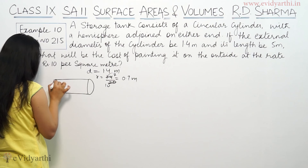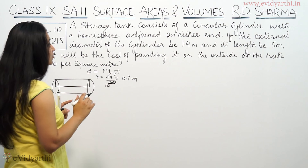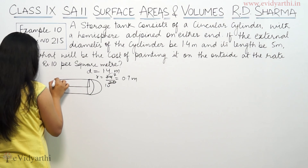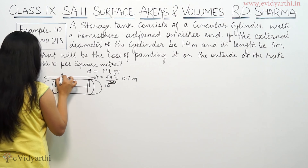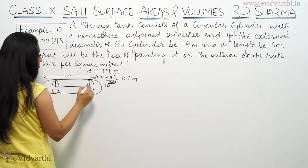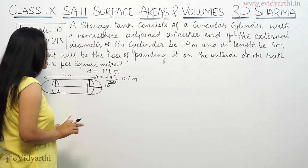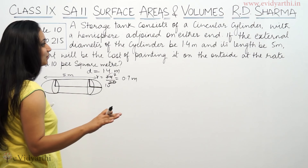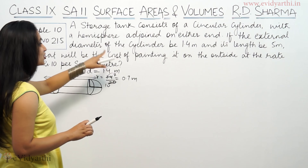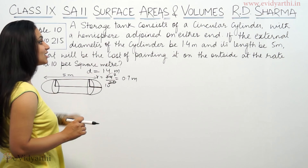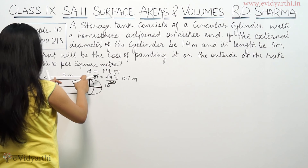So the radius is 0.7 meters. The figure is a circular cylinder with hemispherical ends. The whole total length is 5 meters. The external diameter of the cylinder is 1.4 meters and the total length is 5 meters, so this entire length is 5 meters.